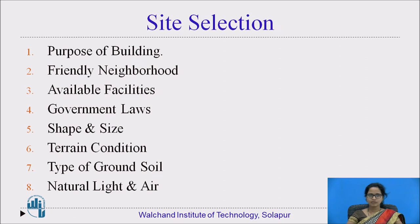Site selection. These are the factors which should be considered in site selection. First is the purpose of the building. Second, the friendly neighborhood. Third, available facilities. Fourth, government laws. Fifth, the shape and size. Sixth, the terrain condition and the type of ground soil. Next is natural light and air.